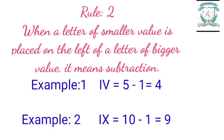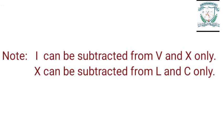Rule 2: When a letter of smaller value is placed on the left of a letter of bigger value, it means subtraction. Example 1: IV = 5 − 1 = 4. Example 2: IX = 10 − 1 = 9. Note: I can be subtracted from V and X only, and X can be subtracted from L and C only.